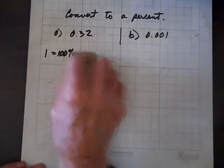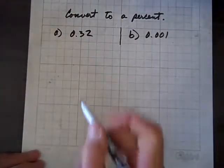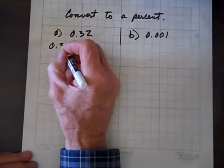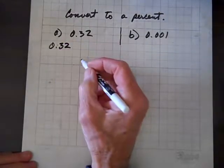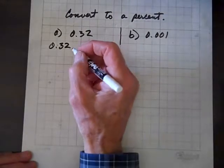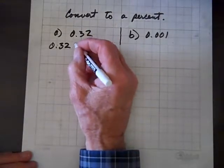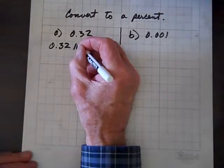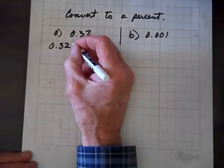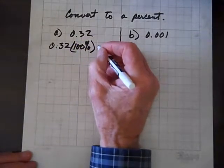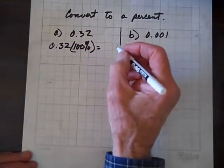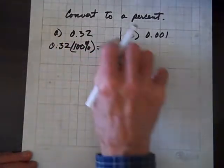Now, with that said, let's move on. So, we've got 0.32, and we're going to multiply by 1 in the form of 100%. So, when we do that, by the way, I'm going to do it down here.